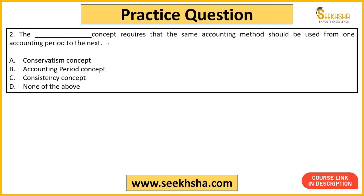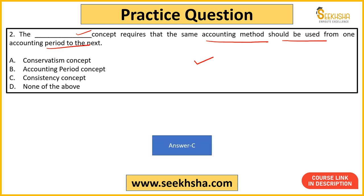Next question: the dash concept requires that the same accounting method should be used from one accounting period to the next. Ki for example, ek particular accounting period ke andar agar aapne ek accounting method use kiya hai, to doosare accounting period ke andar bhi same method use karo — yeh kaun sa concept kehta hai? Answer hoga, aapka option c: consistency concept.